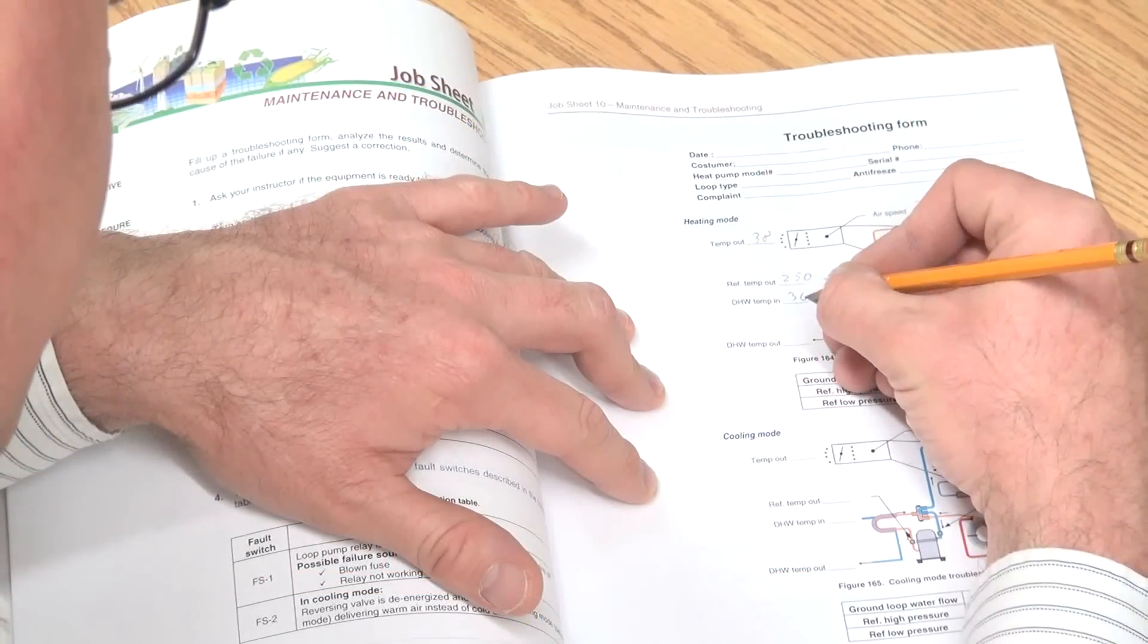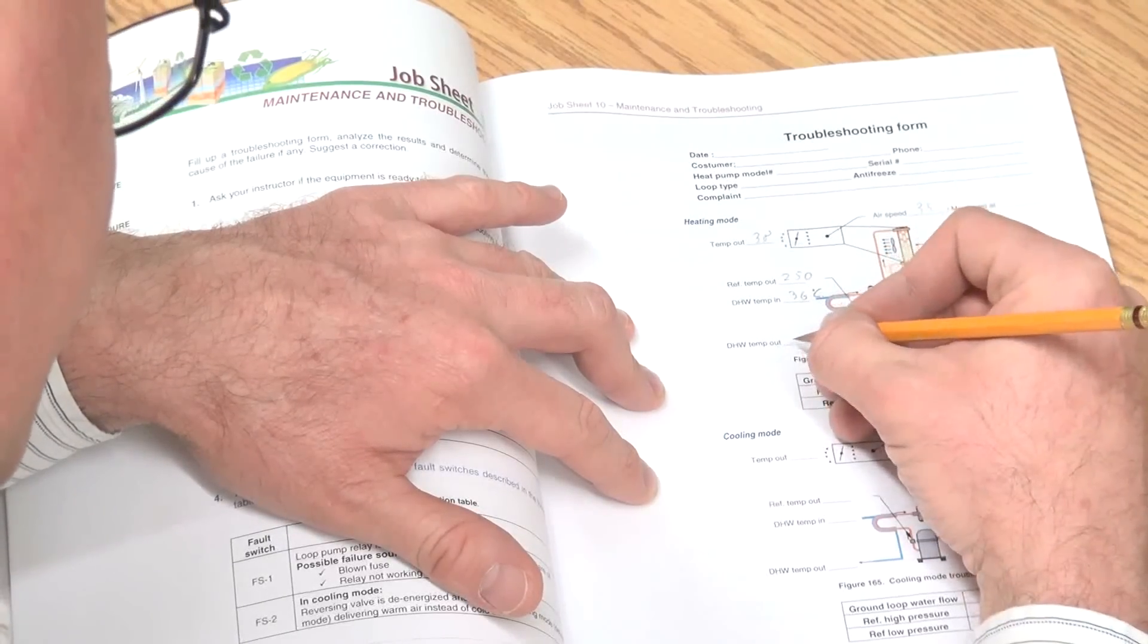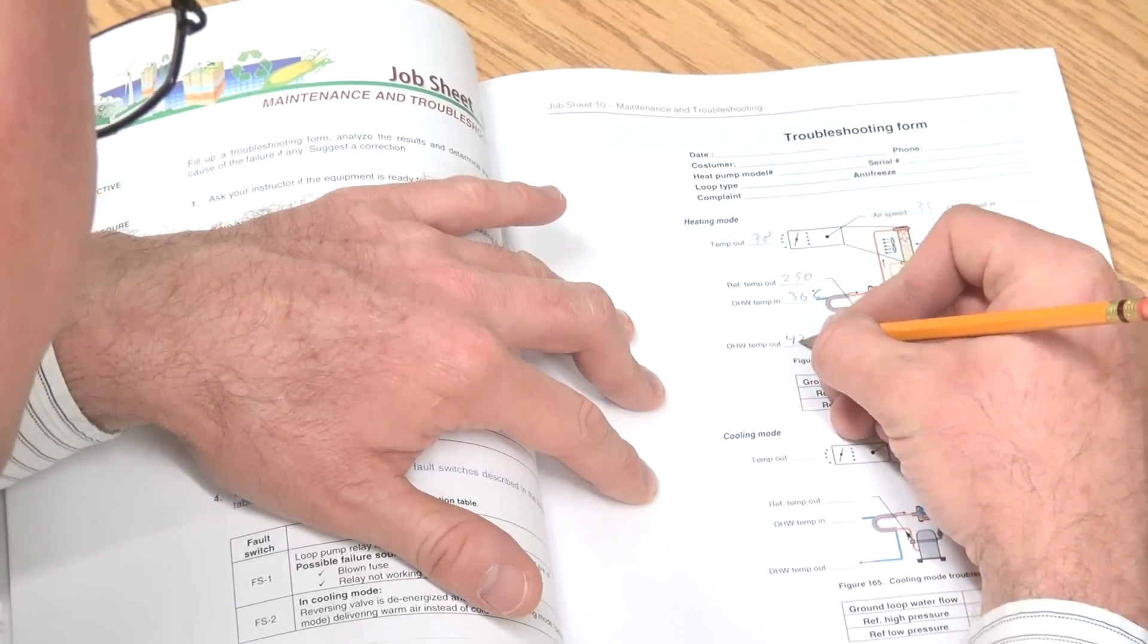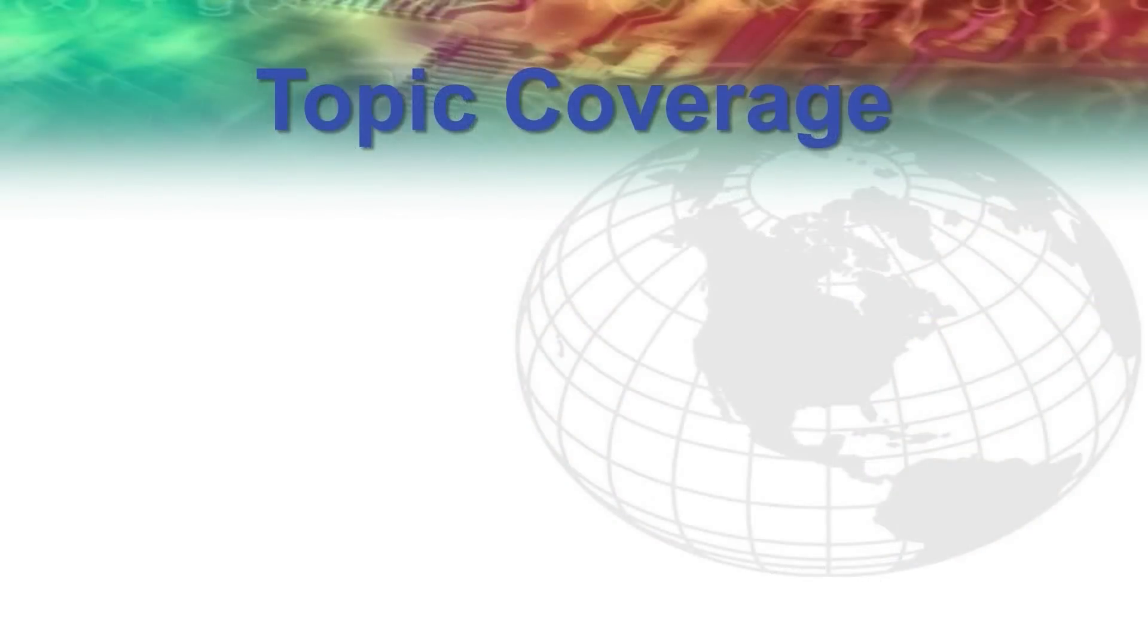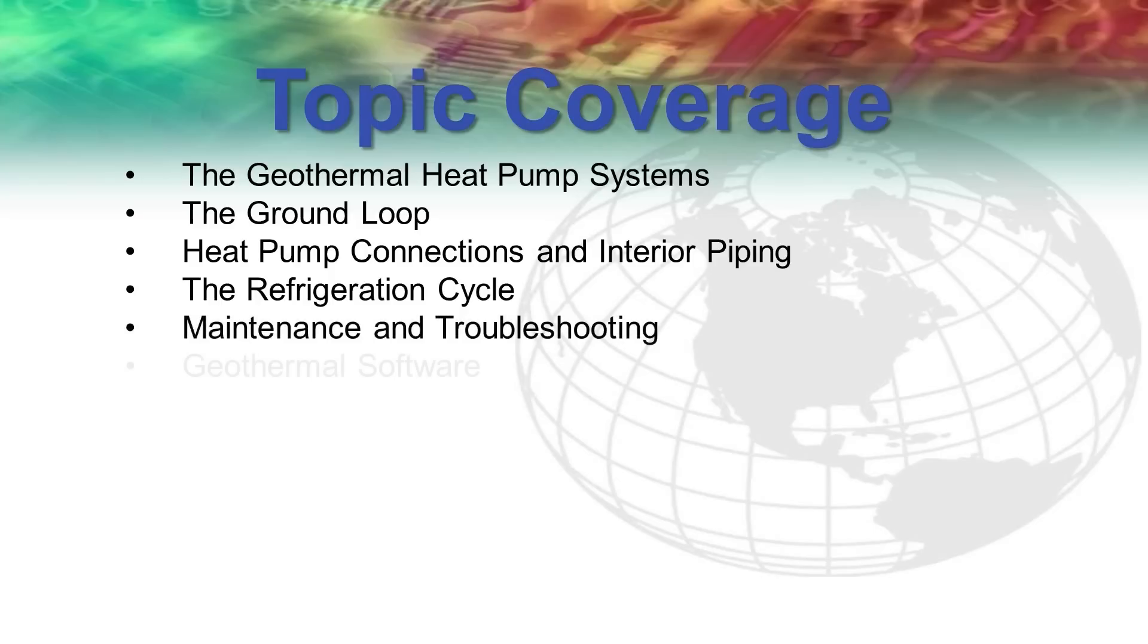The full-color laboratory manual guides the students step-by-step through the 11 experiments and provides the necessary theoretical background. It covers study of the geothermal heat pump systems, the ground loop, heat pump connections and interior piping, the refrigeration cycle, and maintenance and troubleshooting.